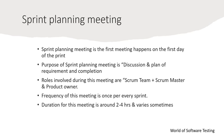The sprint planning meeting is the first meeting and happens on the first day of the sprint. During this meeting, the team commits to and picks requirements for the upcoming sprint. The sprint requirements and planning are frozen during the meeting — specifically the sprint goal, what product backlog items can be accomplished in the upcoming sprint, and how to achieve each item.